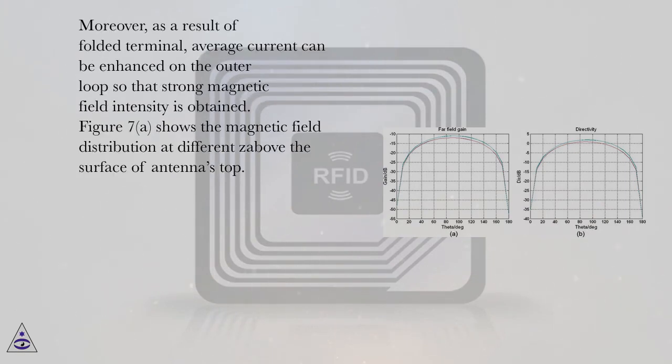Moreover, as a result of folded terminal, average current can be enhanced on the outer loop so that strong magnetic field intensity is obtained.